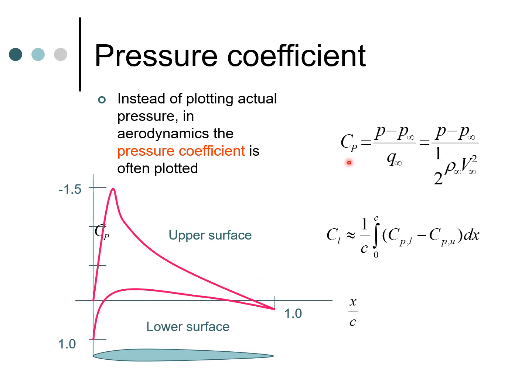I have defined it here. Cp is equal to p minus p infinity by q infinity. The infinity subscripts essentially mean the values very far out in front of the airfoil section. They are being used as a reference here, and dividing these two quantities lets us create a non-dimensional quantity because q is the dynamic pressure. Q is half rho v square, and the denominator and numerator both have dimensions of pressure. So Cp is a non-dimensional coefficient.